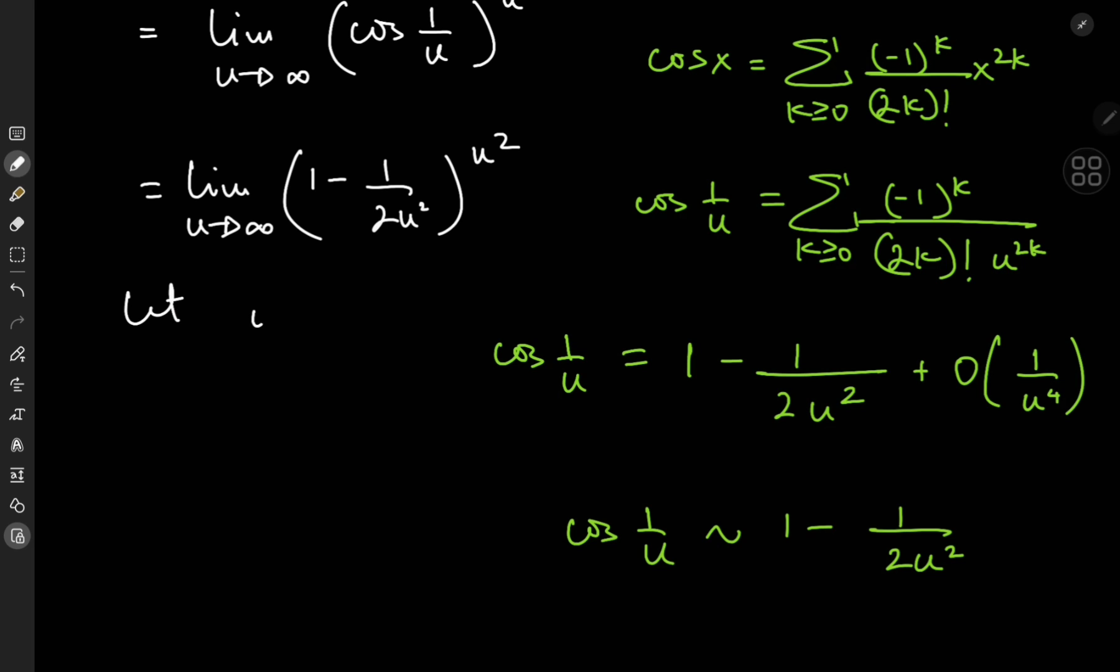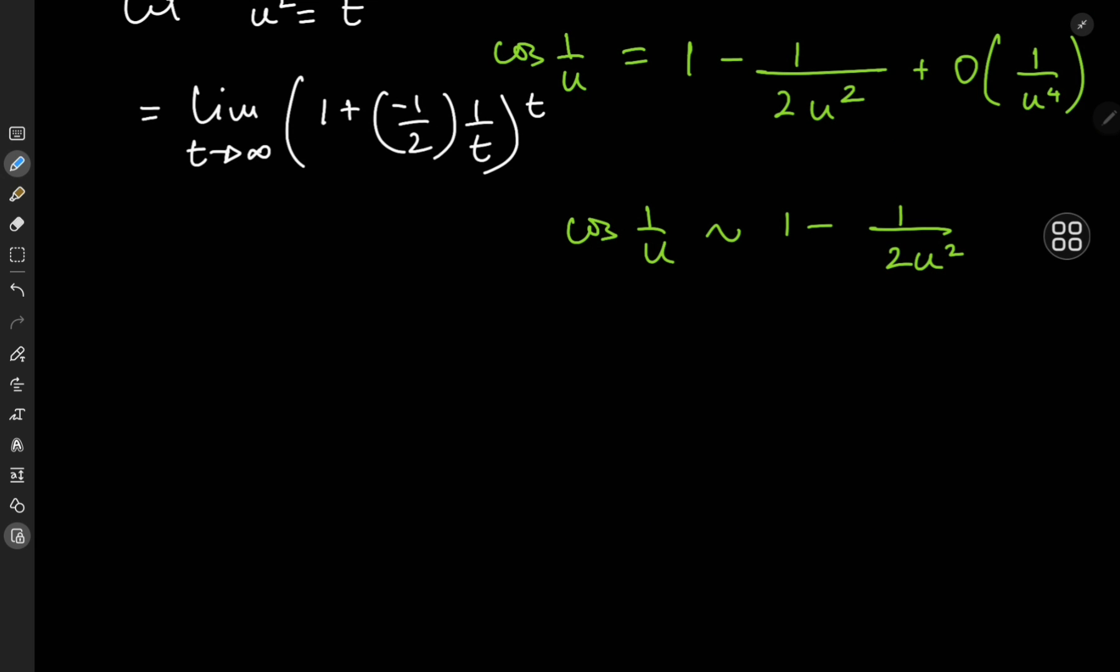And now for one more transformation, I'm going to let u squared equal t, meaning that I now have the limit as t tends to infinity of 1 plus negative 1 half times 1 by t to the t.